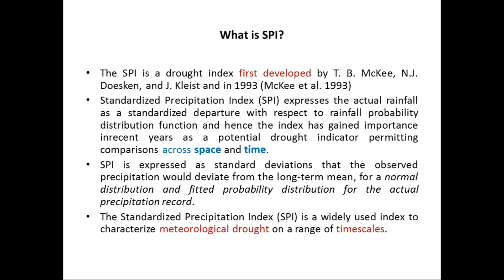The index has gained importance in recent years as a potential drought indicator, permitting comparisons across space and time. SPI is expressed as the standard deviation that the observed precipitation would deviate from the long-term mean for a normal distribution, and for a probability distribution for the actual precipitation record.